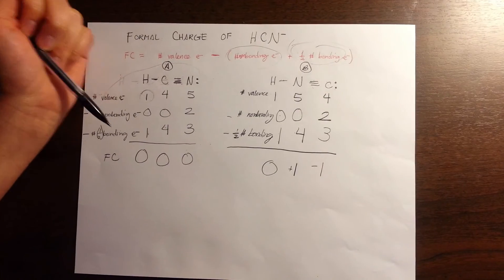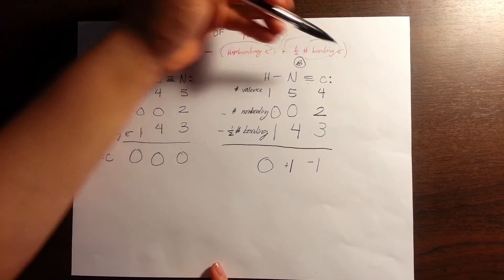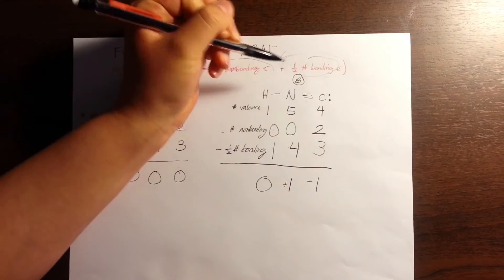Secondly, the formal charge should be on the most electronegative element. And here it's actually not, because our negative one formal charge is on the carbon, which is less electronegative than nitrogen.